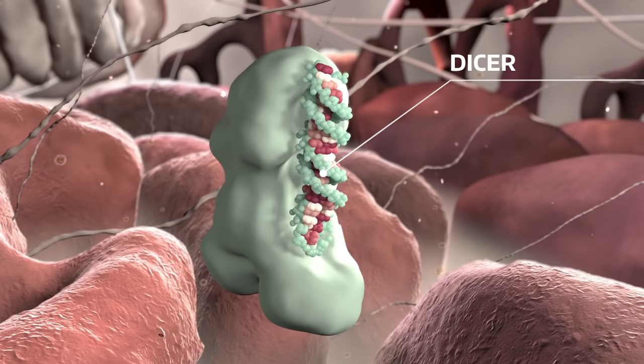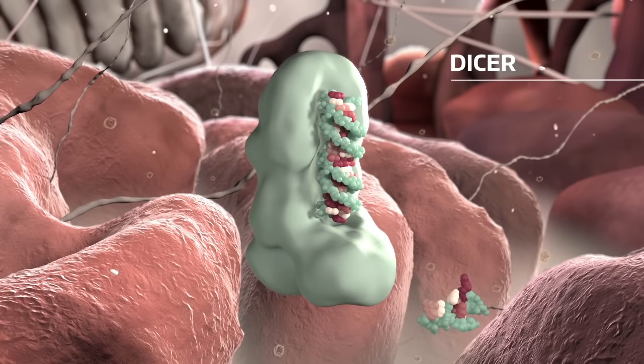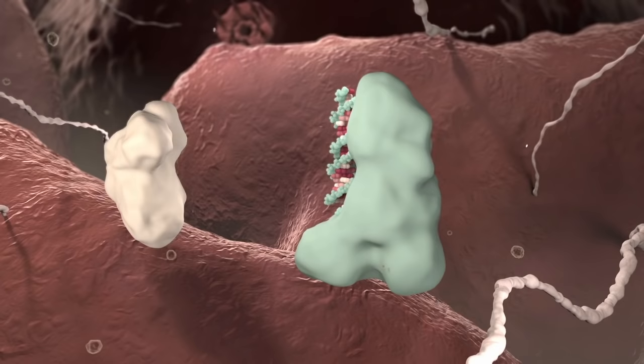In the cytoplasm, it is recognized by a large RNase protein called DICER. DICER cleaves the stem loop and forms a short double-stranded microRNA molecule.